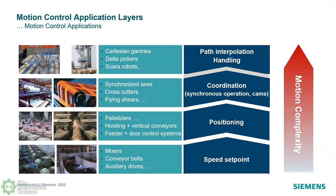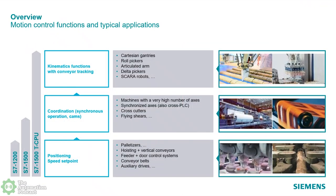Coming back to how Siemens motion controllers fit with all applications: on the left-hand side we have our most popular PLCs — the basic S7-1200, then our S7-1500, and the S7-1500 technology CPUs. What we're showing is how motion complexity builds from simple speed and positioning to coordination to handling applications. Even our simple 1200 basic PLC, very low cost and versatile, can do positioning and speed. The standard 1500 can as well, including fail-safe. The 1500 can also do a little coordination — yes, for simple gearing like 2-to-1, 3-to-1, 4-to-1.